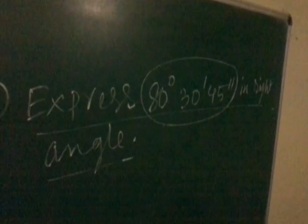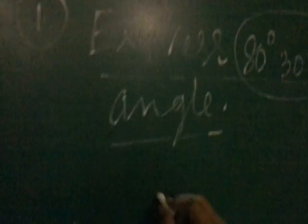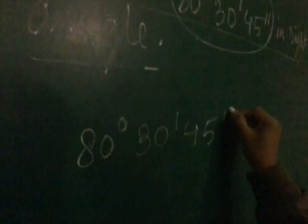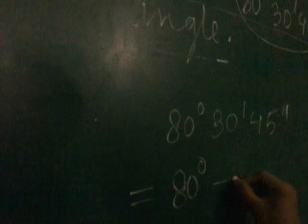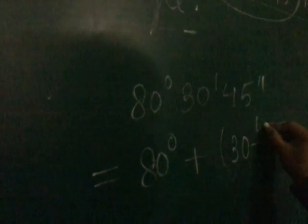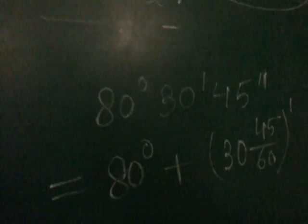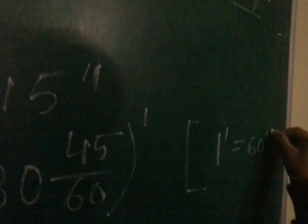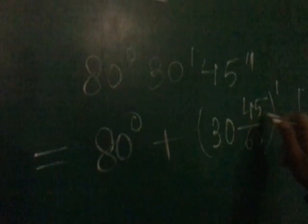First we start — we convert this whole figure into degree. 80 degree, 30 minute, 45 second equals to 80 degree plus 30 by 45 by 60 minute. Why? Because we know in the sexagesimal method, 1 minute is equal to 60 seconds. So 1 second equals 1 by 60, which when divided by 60 gives 30, 45, 60.